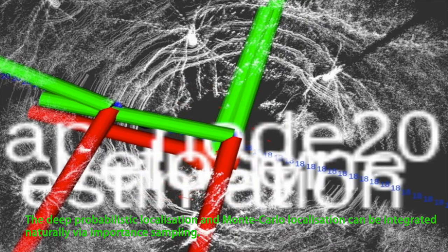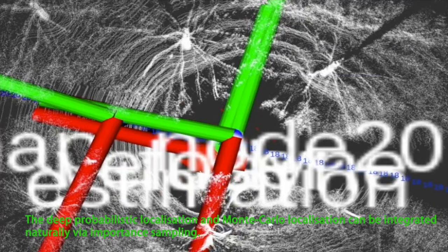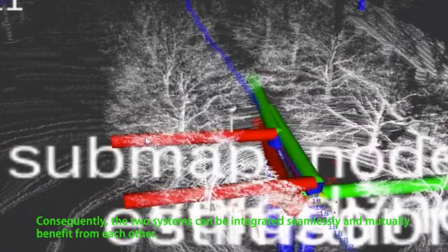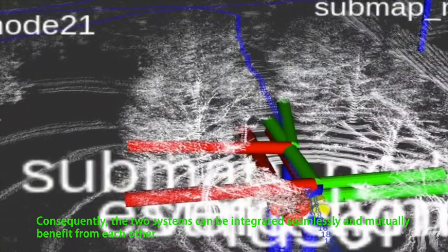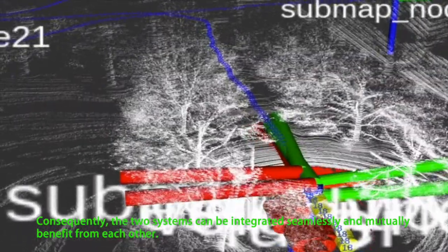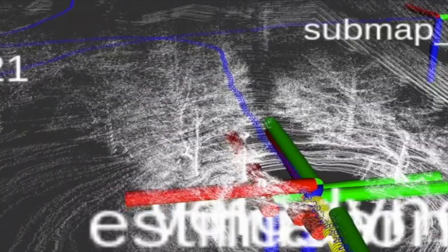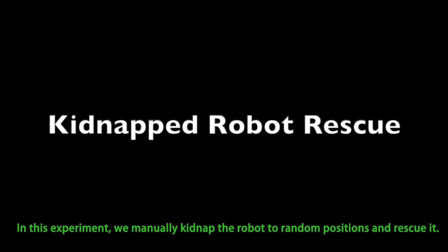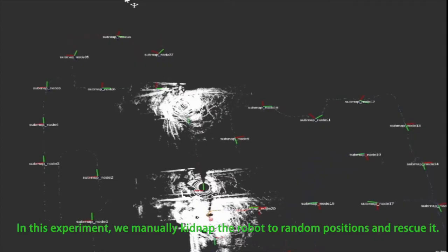By importance sampling, the global pose estimation can be integrated seamlessly with Monte Carlo localization. And the two localization systems can mutually benefit each other. By running them simultaneously, the long-term localization can be achieved. You can understand the deep net is working like a virtual global positioning system.